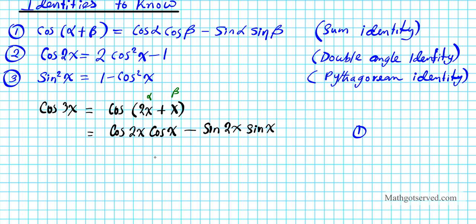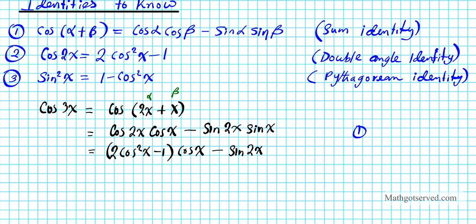Now let's shift our attention to cosine 2x. I have a double angle here, so I'm going to make use of the double angle identity — formula 2 — to break it down. I'll replace cosine 2x with 2 cosine squared x minus 1. So the expression becomes (2 cosine squared x minus 1) cosine x minus sine 2x sine x.